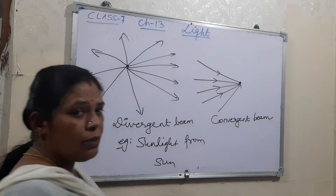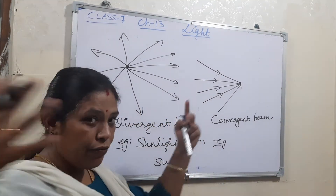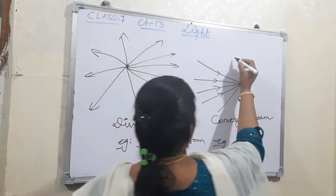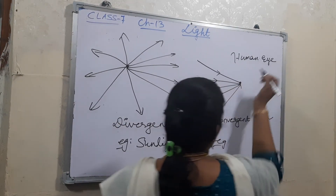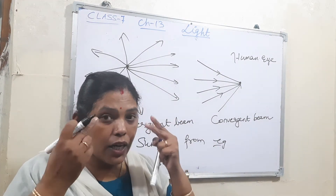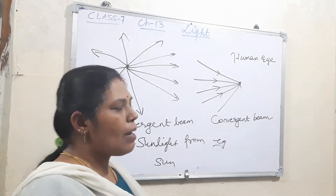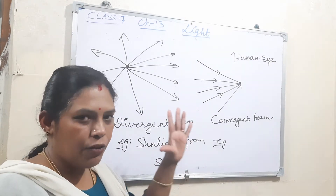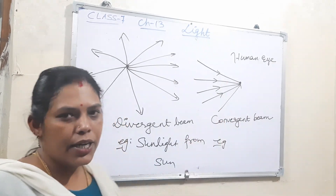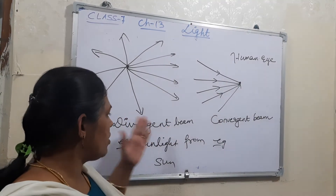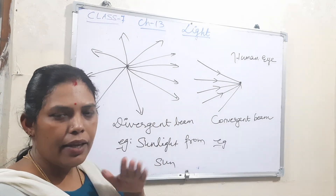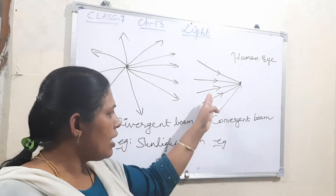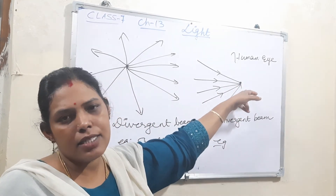An example of convergent beam is the human eye, because light from different directions falls on our retina and the image is formed there. Cameras also work the same way — light from different directions reaches the camera lens. So divergent beam is from one point to different directions, and convergent beam is from different directions meeting at one place.